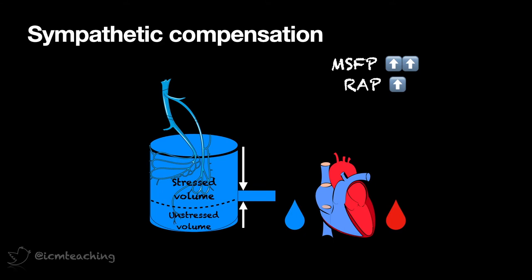Now there does of course come a point where the veins can't constrict anymore. If any more blood is lost, the sympathetic nervous system can't compensate any further, and stressed volume and cardiac output will fall. This is why we always need to be very wary about patients who may be hypovolemic, who appear to have a reasonable blood pressure. It may just be about to crash.